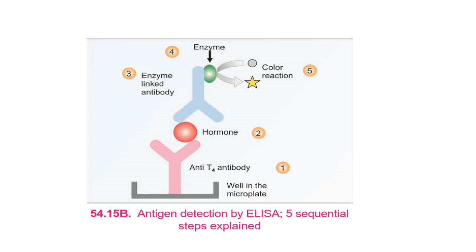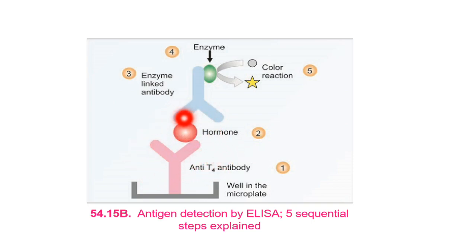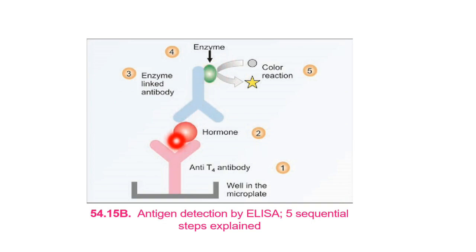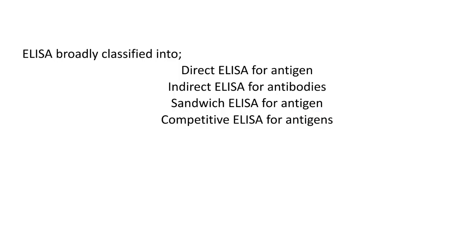Here you can see microtiter plates coated with anti-T4 antibody for detection of the T4 hormone antigen. After adding the sample, the hormone binds specifically with the antibody in the wells. An enzyme-linked antibody is added which binds the antigen, and the substrate is then added to give a color reaction, quantified by spectrophotometry. ELISA is broadly classified into four types: direct, indirect, sandwich, and competitive ELISA.